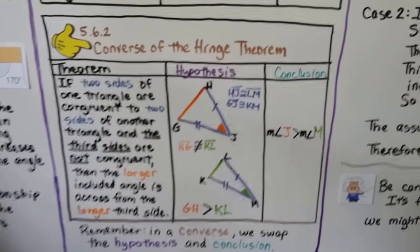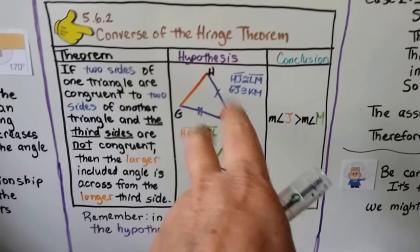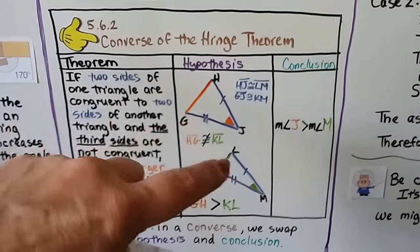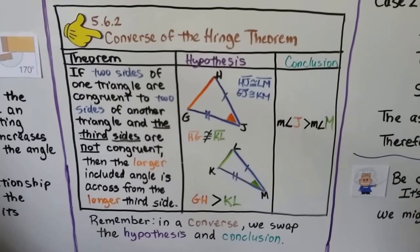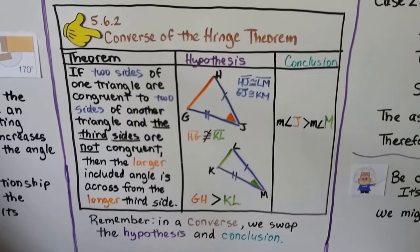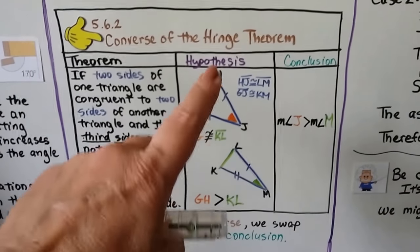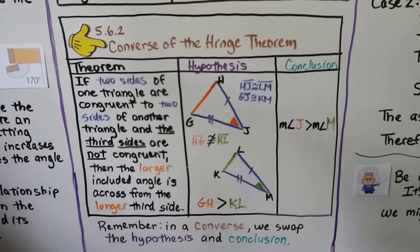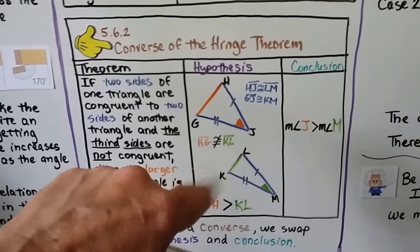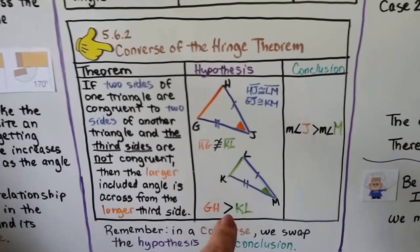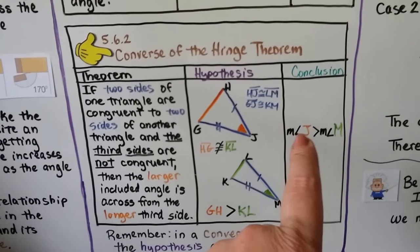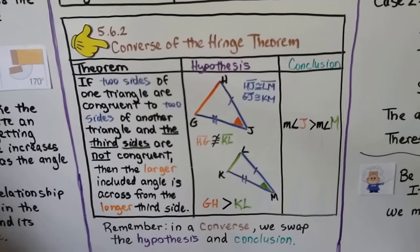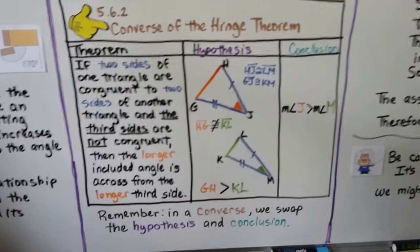The Converse of the Hinge Theorem says: if two sides of one triangle are congruent to two sides of another triangle and the third sides are not congruent, then the larger included angle is across from the larger side. So we know HJ is congruent to LM and GJ is congruent to KM, but HG is not congruent to KL. Since GH is greater than KL, the measure of angle J is greater than the measure of angle M. In a converse, we swap the hypothesis and conclusion.